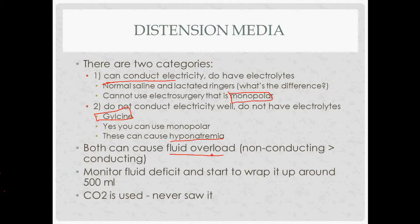Fluid overload occurs because the distension media you're putting into the uterus is under pressure, and that can actually push fluid into the vasculature and get that fluid into circulation. It's more likely to happen when the pressure used to distend the uterus is very high. The higher the pressure in the uterus above the MAP — mean arterial pressure — the more likely you'll have fluid overload. So you want the pressure to be as low as possible while still getting the visualization you need.